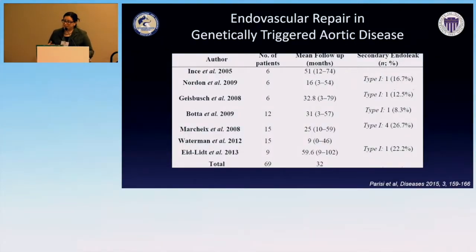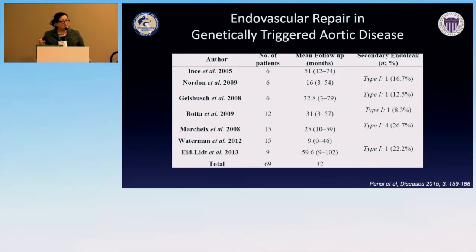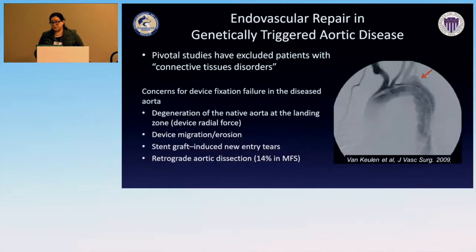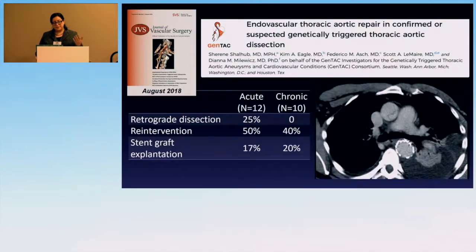In the genetically triggered aortic domain, there's really not a lot of data. Looking at Marfan patients specifically, the main challenge has been the seal at the proximal aorta — type 1 endoleaks — with fairly high numbers where it just doesn't sit right and leaks. The other concern is retrograde aortic dissection from the radial force, which we've already covered.